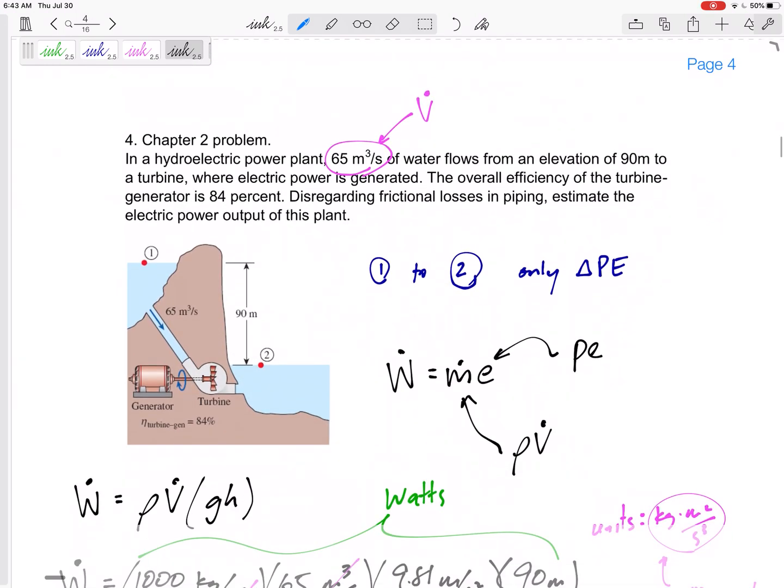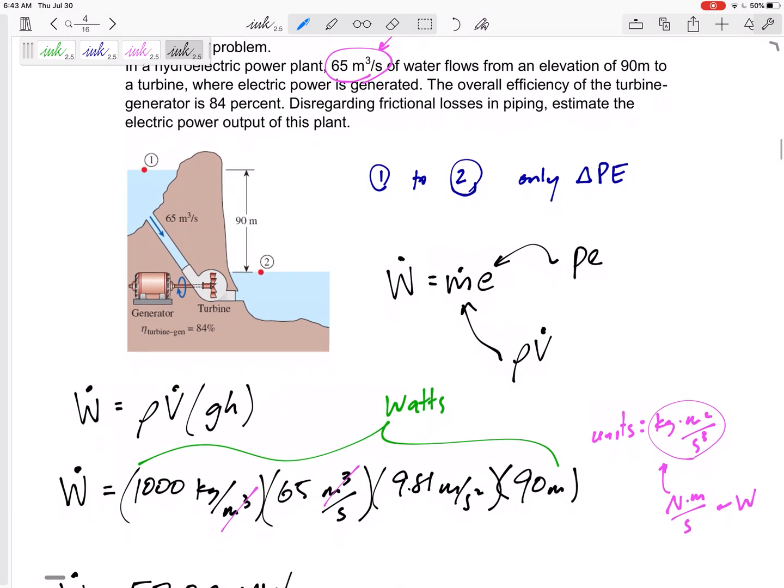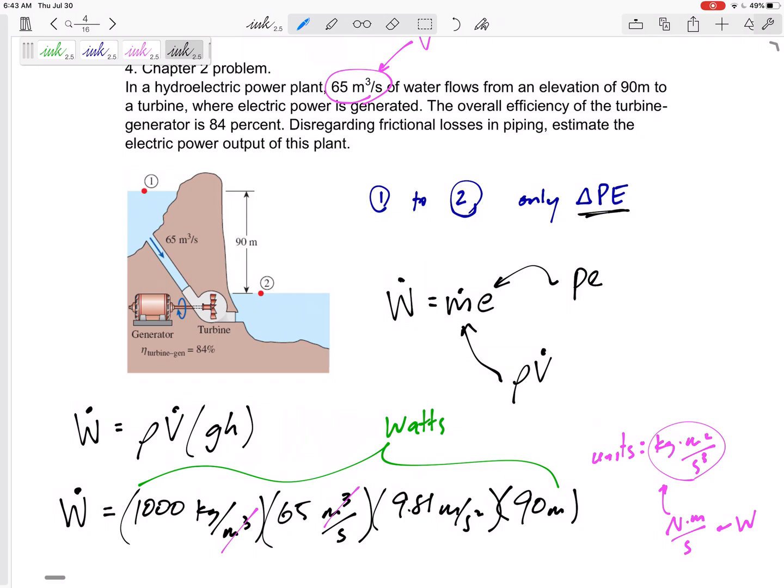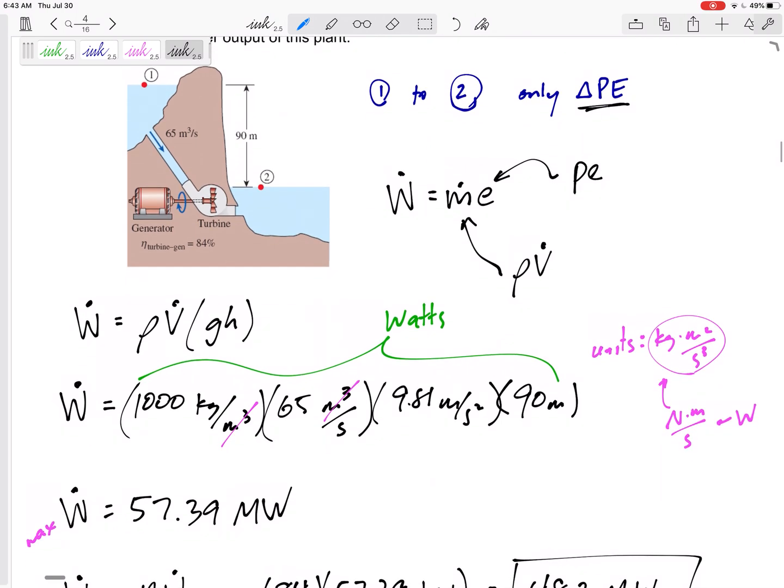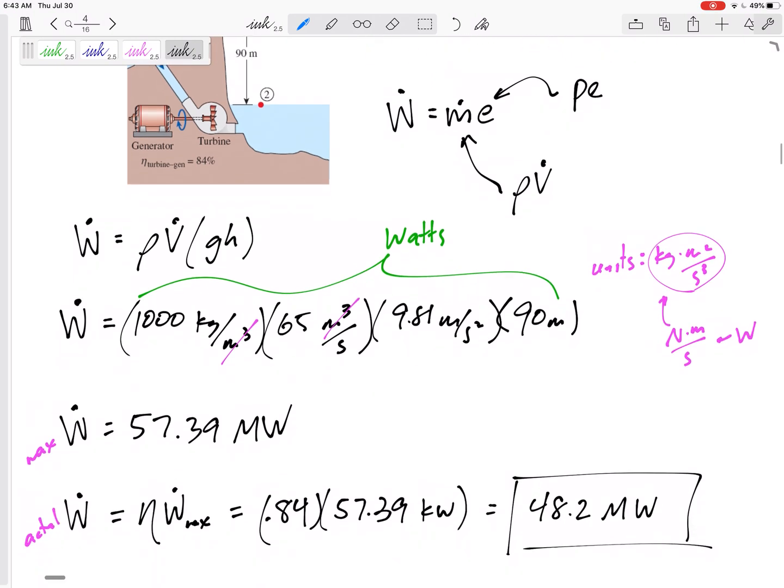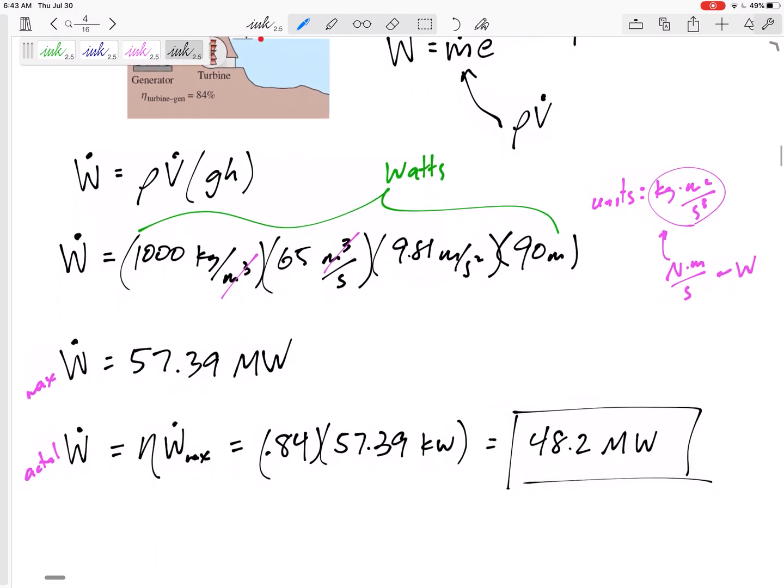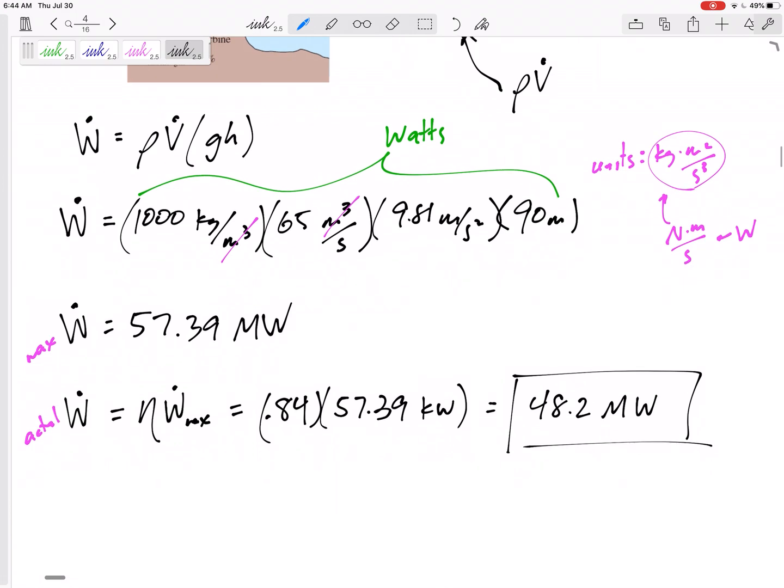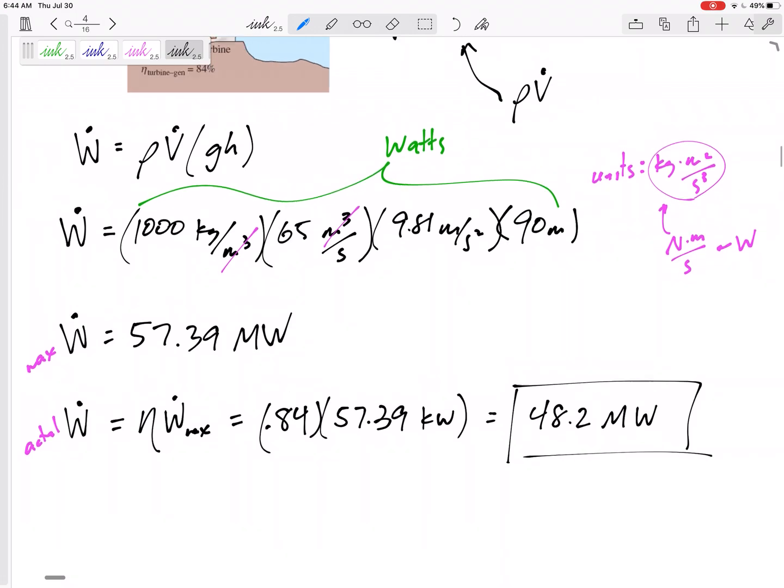That was one example. Look at this problem. I post a solution. This one, the work that we could get out was due to change in potential energy. But then we also had to multiply times the mass flow rate to get the power. That's a maximum power that could get out. But if it's only operating at 84% efficiency, we can only get out 48.2.